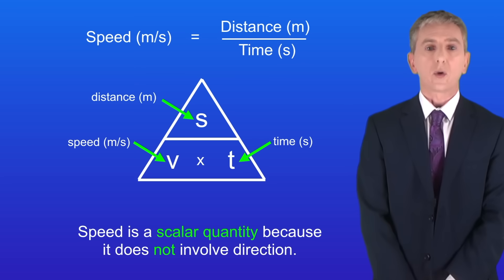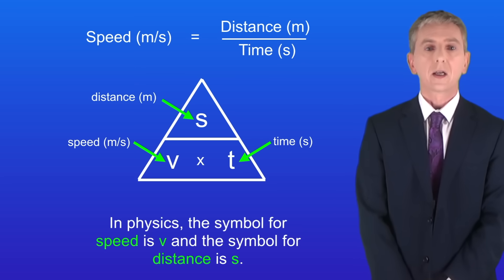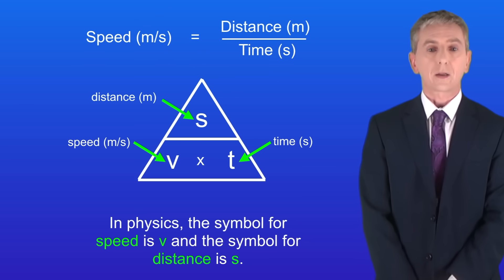I'm also showing you the triangle for this equation in case you prefer to use that. You do need to be careful though. In physics the symbol for speed is V and the symbol for distance is S, so don't get them confused.